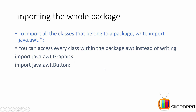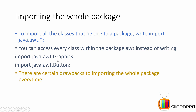In other words, if you are importing say 20 classes from one package, you would have to write 20 separate import statements. That can be reduced to a single statement: 'import java.awt.*'. But as much as possible, try to write the individual import lines instead, because there are certain drawbacks to importing the whole package — and we will take a look at those drawbacks shortly in this video.